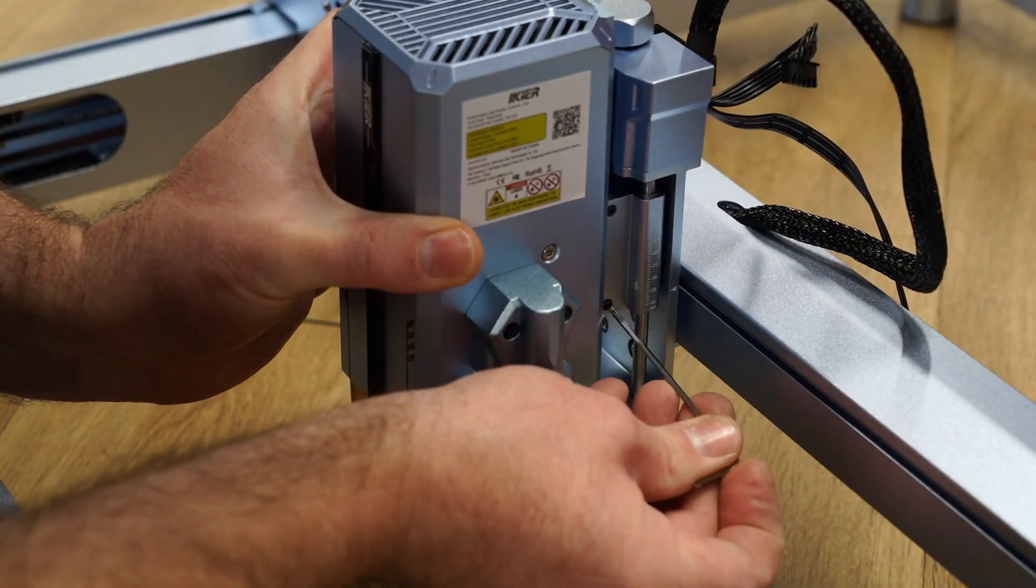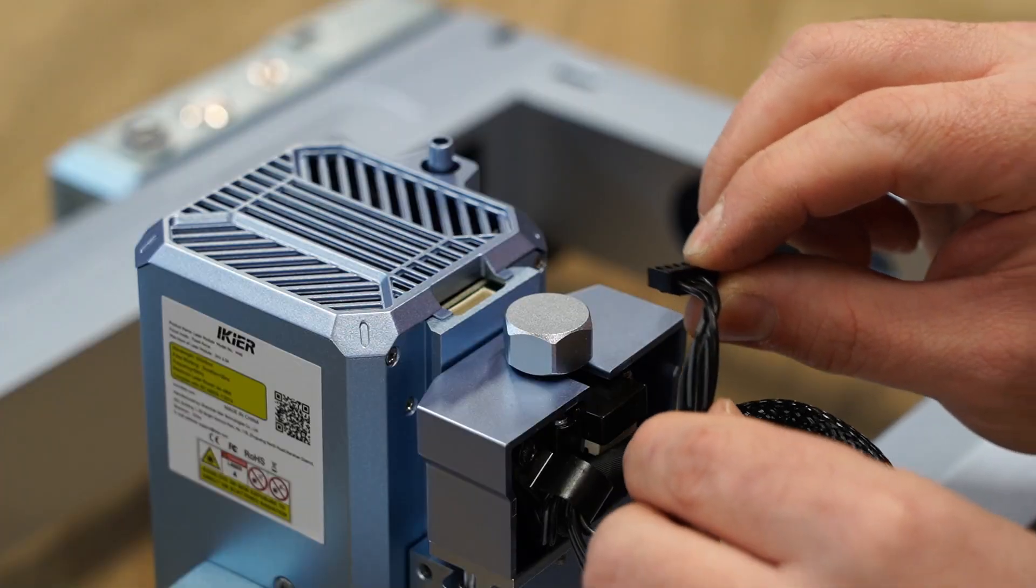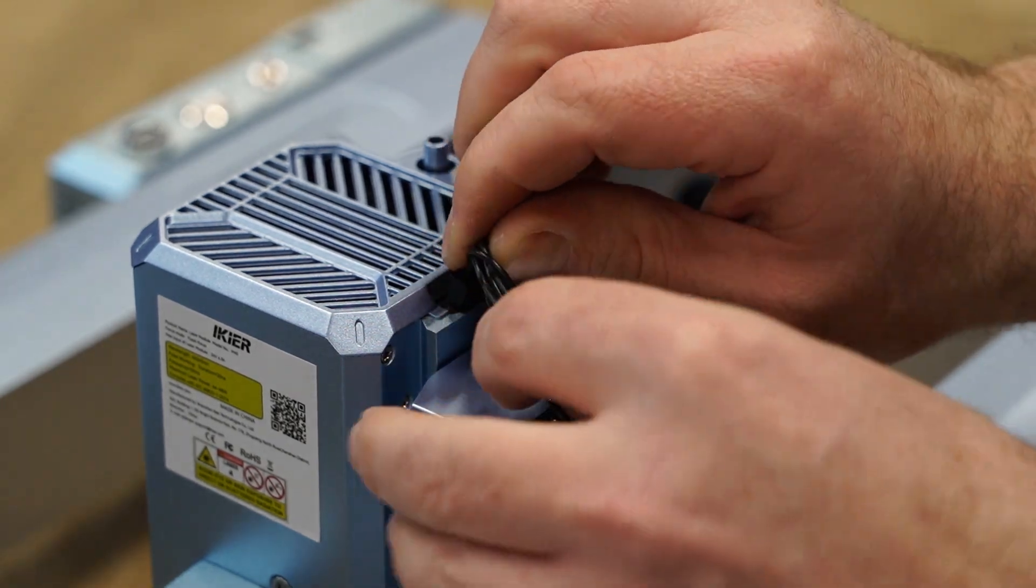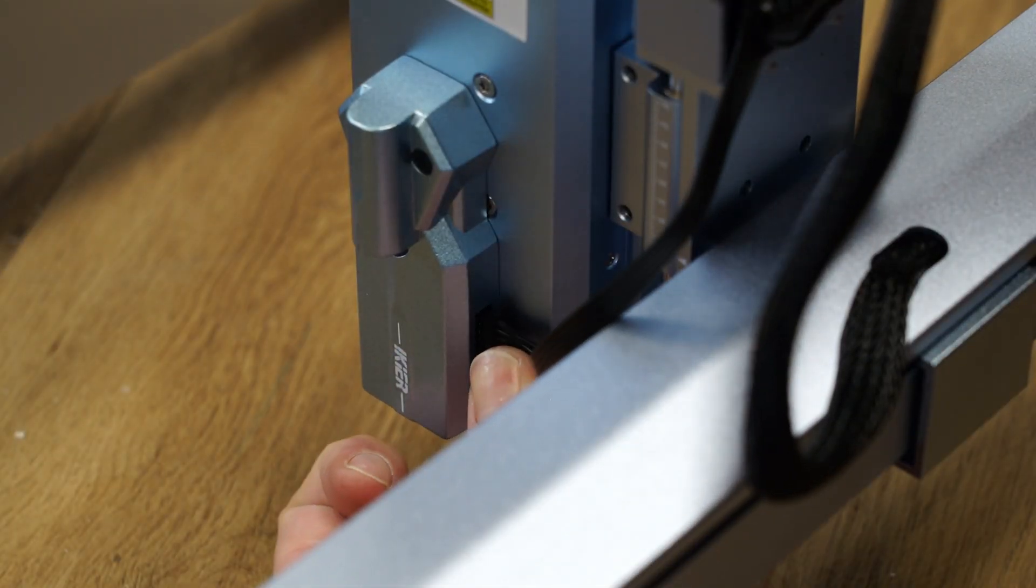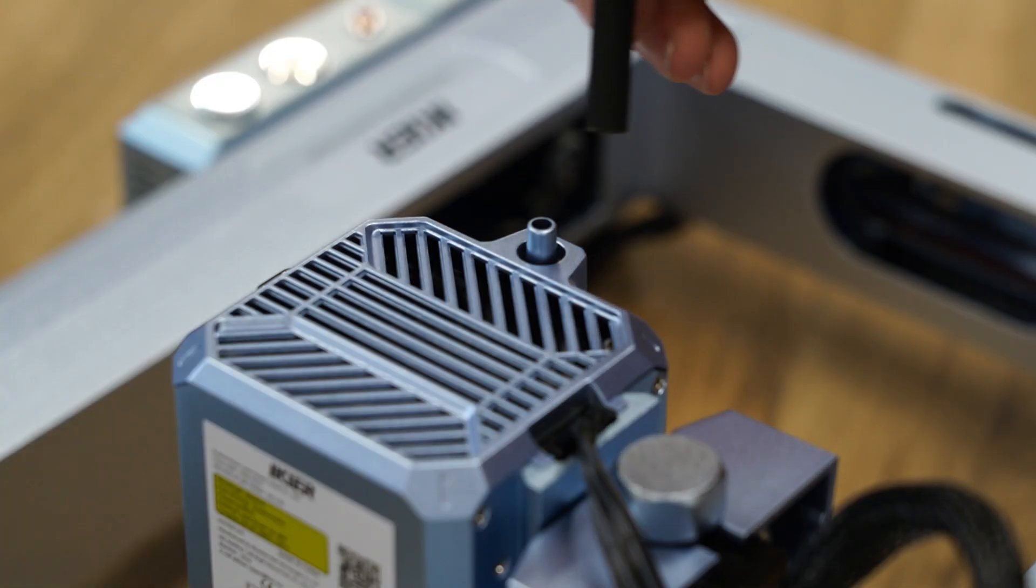Install the laser head. Connect the laser head to the loom and then the air tubing.